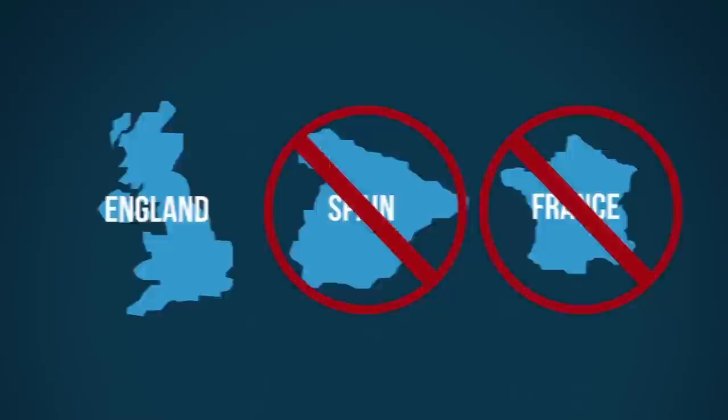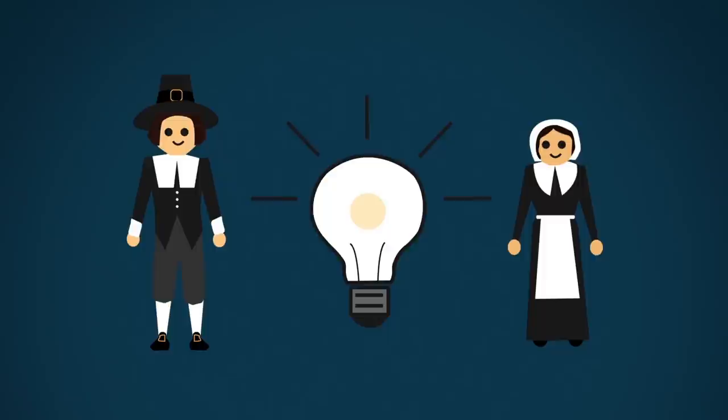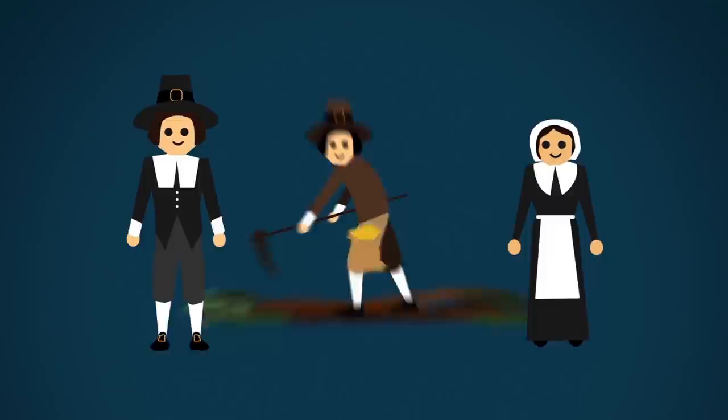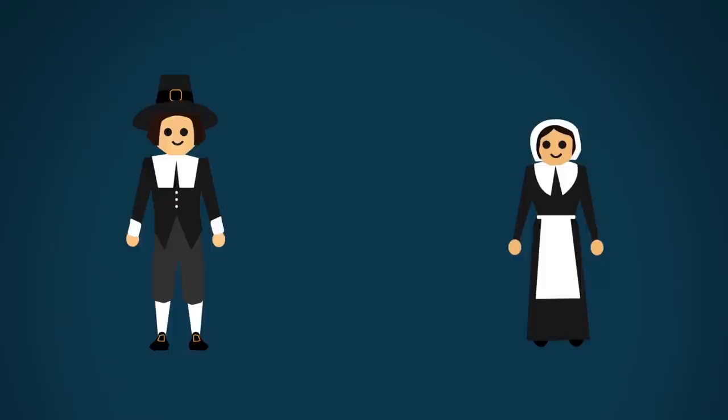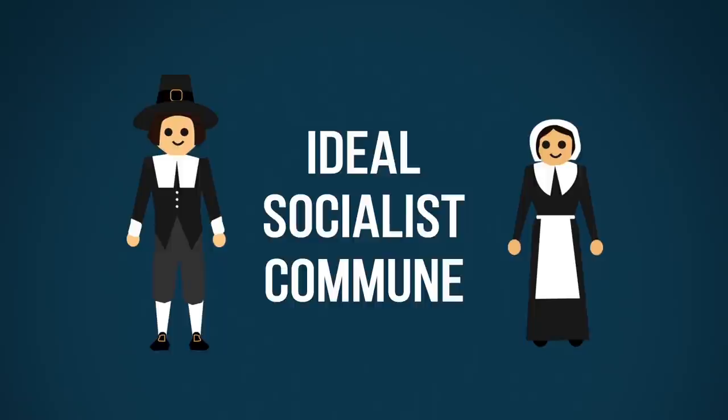The early colonists began their adventure with what they thought was a beautiful idea. They set up a common storehouse of grain from which people were supposed to take what they needed and put back what they could. Lands were also held in common and were worked in common. The settlers owned no land of their own. Though there was no name for this system, it was an ideal socialist commune. And you can probably guess what happened. It began to fall apart almost immediately. As the colonists learned, when everyone is entitled to everything, no one is responsible for anything. A colonist who started his work day early or stayed late received the same provision of food as a colonist who showed up late, went home early, or didn't work at all.